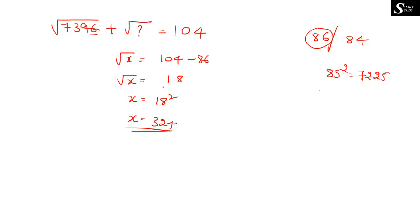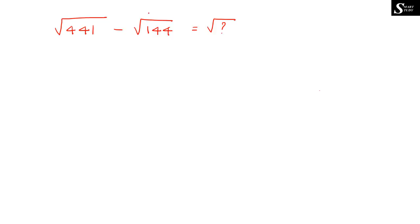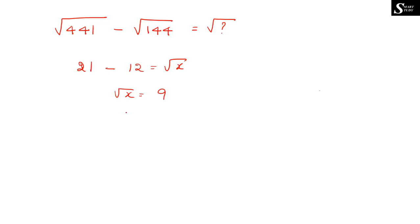So 324 is the answer for this question. I hope you understood. The next question is: √441 − √144 = √x. This takes no time to solve because we know √441 = 21 and √144 = 12. So √x = 21 − 12 = 9.